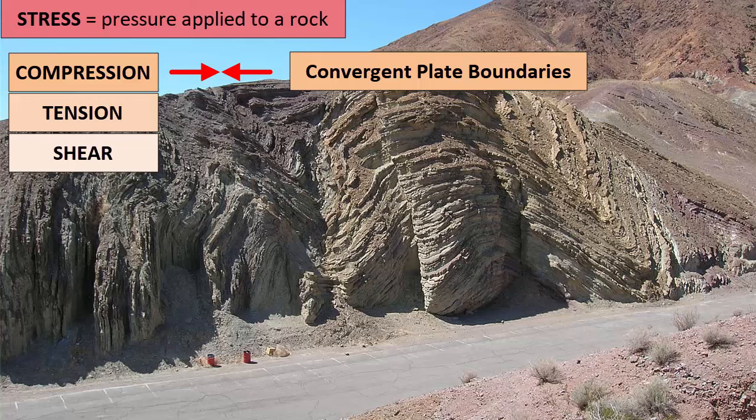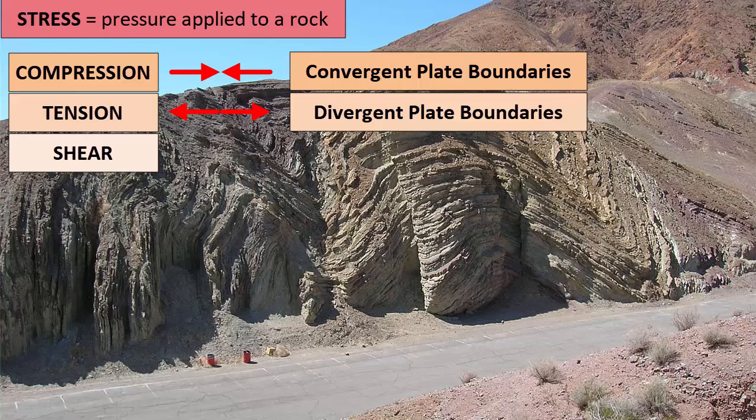When rocks undergo tension, they are pulled apart. Tension happens at divergent plate boundaries, where plates spread apart, and the crust and plates get thinner.